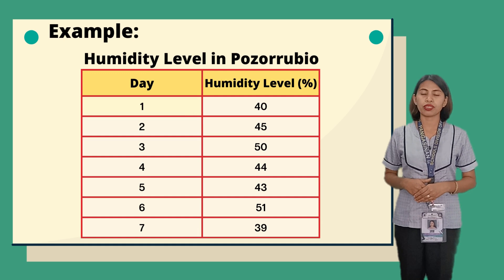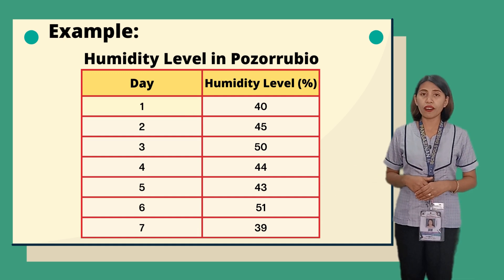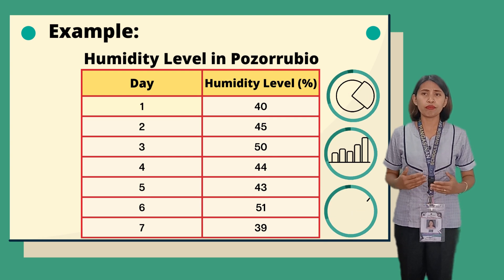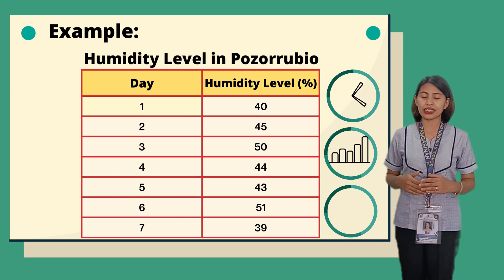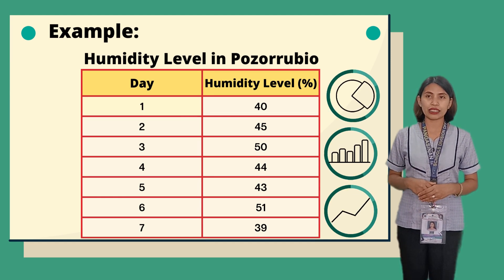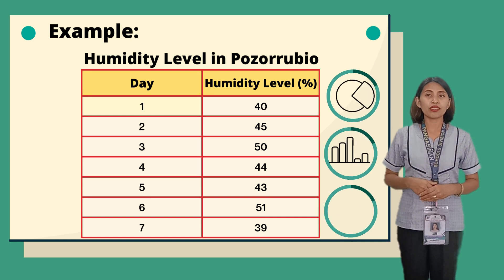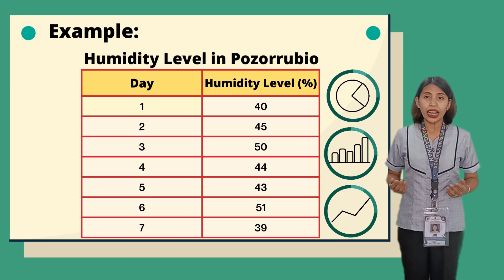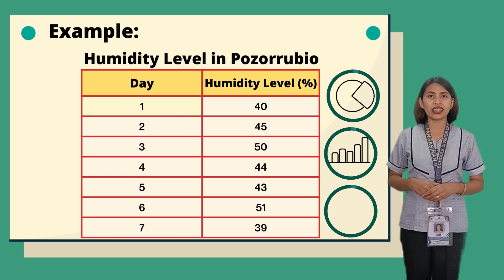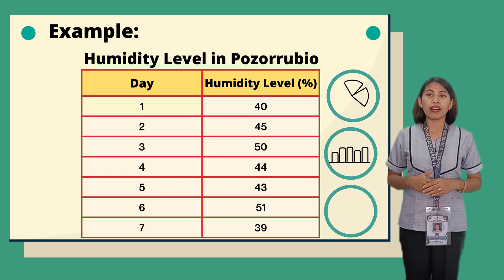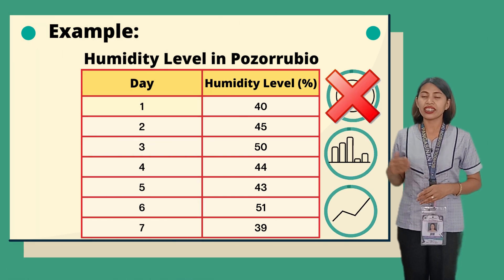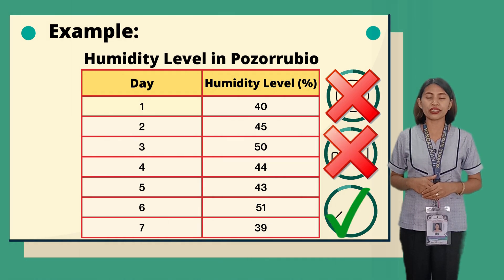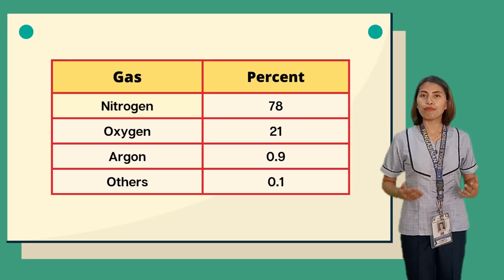Problem number two: the table shows the humidity level recorded in Puzo Rubio. What graph would best demonstrate the humidity level for each day? Although the data is given as percent, which might suggest a pie chart, the data does not represent parts in relation to a whole. Since the data is changing over time, a line graph would be the appropriate choice for summarizing this data.